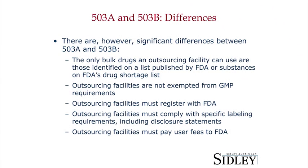In order to use an API for an outsourcing pharmacy, that API must appear on a list that FDA publishes, or it must appear on FDA's drug shortages list. The idea is that even if an API is used in an FDA-approved drug that doesn't otherwise appear on this list, if it falls into shortage, Congress is clearly saying it wants these 503B outsourcing pharmacies to help fill the void and compound drugs to serve patients in the case of a shortage of the commercially available product.